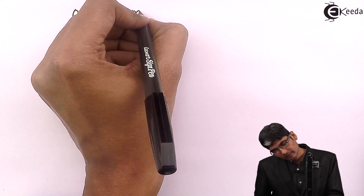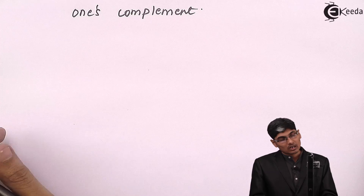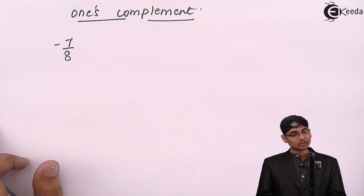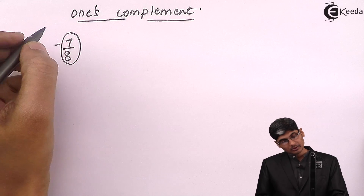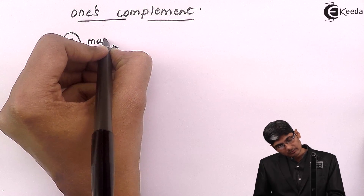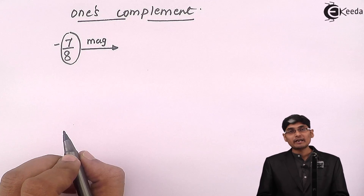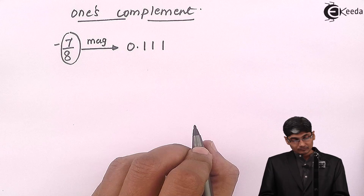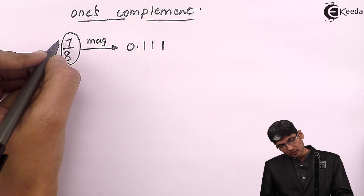Today we are going to see the effects of truncation on one's complement format. One's complement is a format used to represent a negative binary number. Let's take an example: the number minus 7/8. We first consider the magnitude of this number and represent it in binary format. The binary format for the magnitude 7/8 is 0.111.